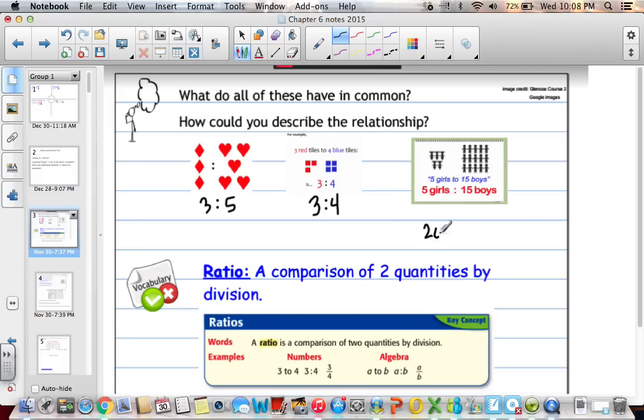There's actually 20 students that we're talking about. So we can also write it as a fraction, 5 to 15. It's not saying that out of 15 kids there's 5 girls. It's actually saying there's 5 girls, 15 boys. And out of 20 students, there's 5 girls, 15 boys. So a little bit different since we've been talking about fractions. We have to change our thinking just a little bit.